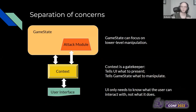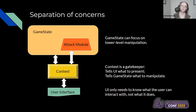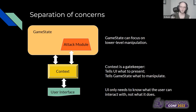In that way, the context is able to gatekeep what's available to happen. The context tells the UI what to present and tells the game state what to manipulate. That means the game state doesn't have to worry about whether it's the right context — it can just do it. And the UI doesn't really have to know what it means for something to be clicked. It just has to display what's clickable and communicate with text to the user how to deal with it — the context is responsible for that operation.